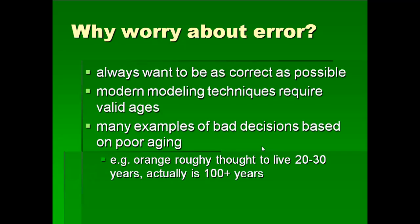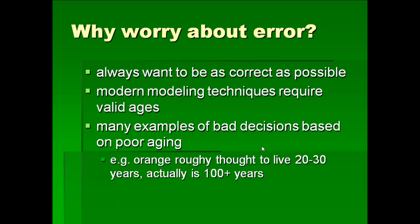There are a lot of examples of bad decisions that were based upon poor aging. For example, the orange roughy, a highly exploited commercial fish, was thought to live 20 to 30 years — thought to mature early and be typical of other marine species. Actually, now we think it lives to be 100 plus years, and that has a very large effect on our idea of how to manage the species.